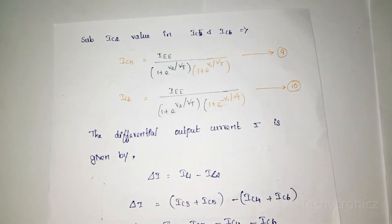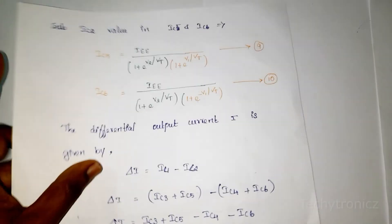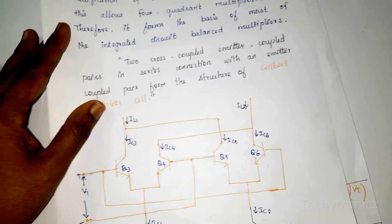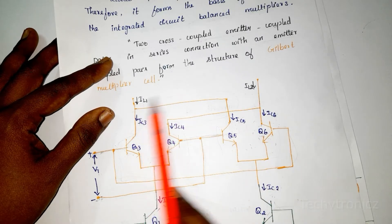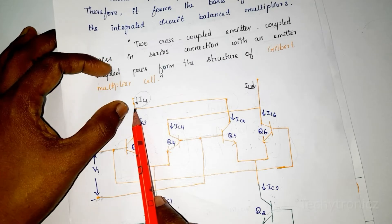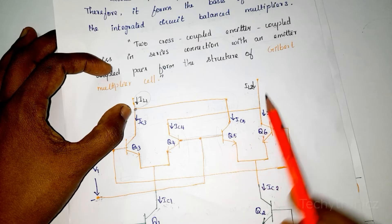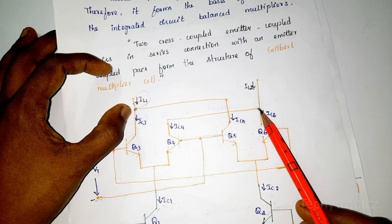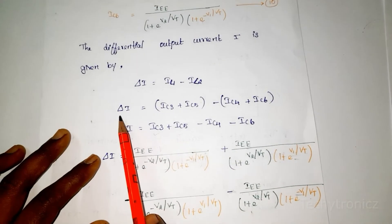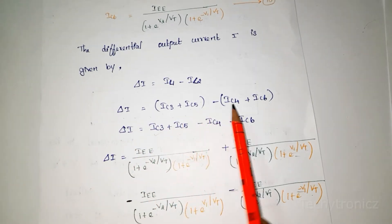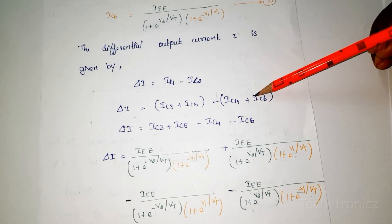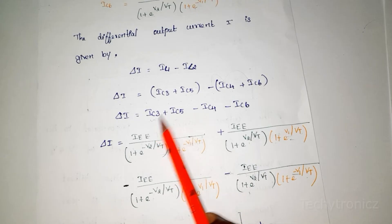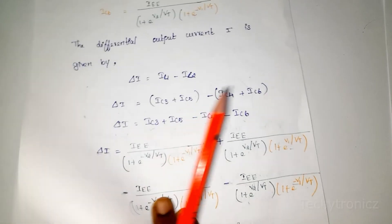Now we write the differential output current ΔI. The differential output current is IL1 minus IL2. Applying node law: IL1 = IC3 + IC5, and IL2 = IC4 + IC6. Therefore ΔI = (IC3 + IC5) − (IC4 + IC6). We substitute all values from equations 7, 8, 9, and 10 into this expression.